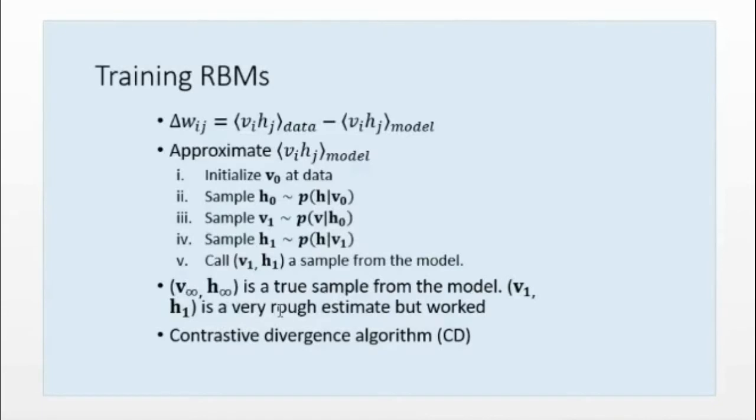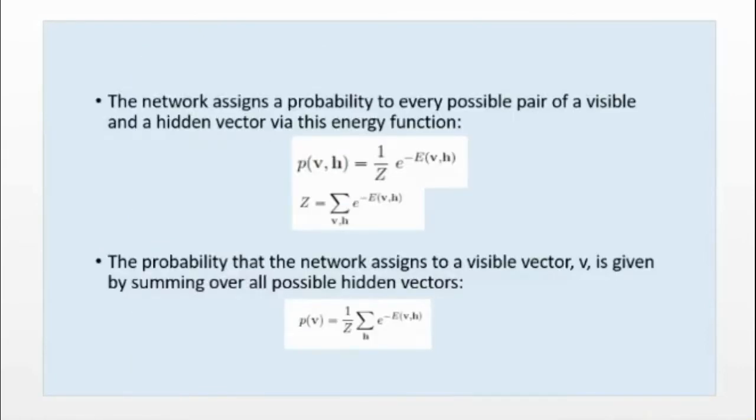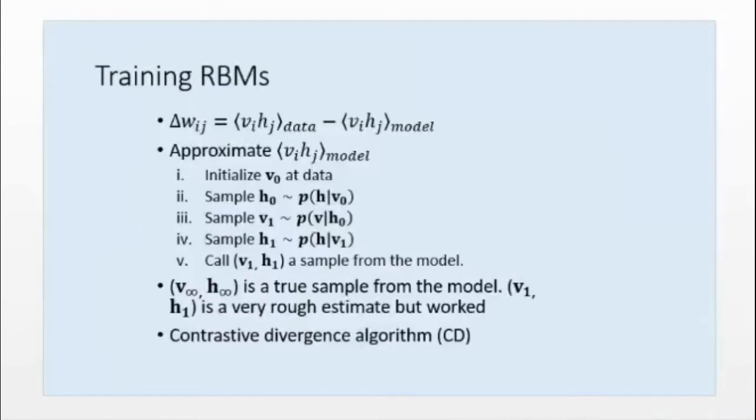We have V1 H1, we have V0 H0, we find the difference. Similarly if we process infinite times, actually we say V infinity and H infinity is the true sample from the model V1 H1. So to calculate this difference between these two distributions, then Hinton discovered this contrastive divergence algorithm. So to calculate this difference, to estimate del WIJ, they have used contrastive divergence algorithm. So with this, here actually in this presentation, I am skipping all the mathematical derivations, but I will provide the resource where you will get all the derivations.